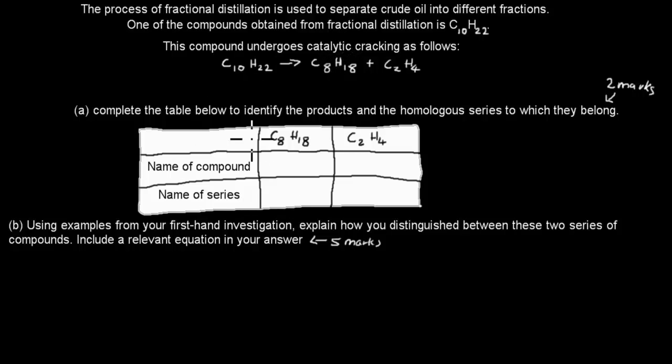The question says: the process of fractional distillation is used to separate crude oil into different fractions. One of the compounds obtained from fractional distillation is C10H22. This compound undergoes catalytic cracking as follows: C10H22 goes into C8H18 plus C2H4.